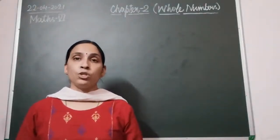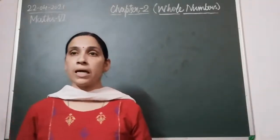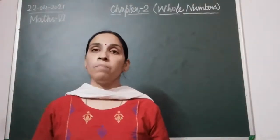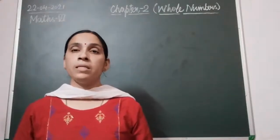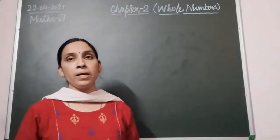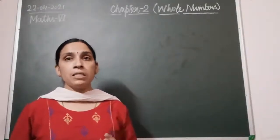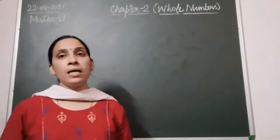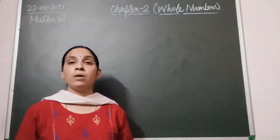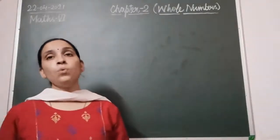We covered the proper definition of whole numbers: natural numbers along with zero form the collection of whole numbers. Natural numbers including zero form a collection or series of whole numbers. This means the smallest whole number is zero, and if asked which is the smallest natural number, your answer will be one. The smallest whole number is zero.